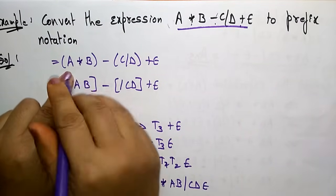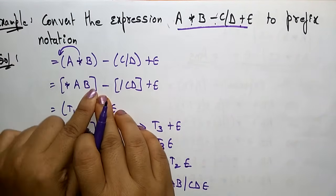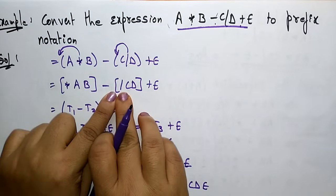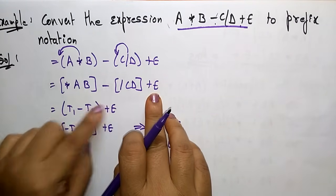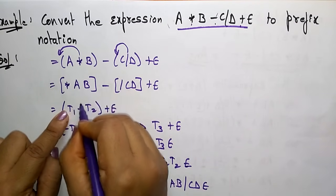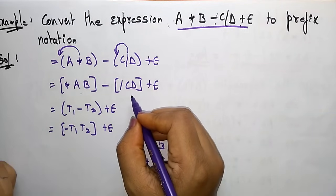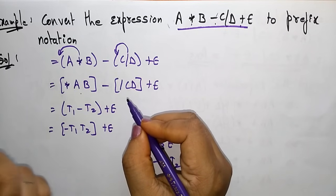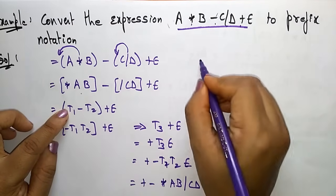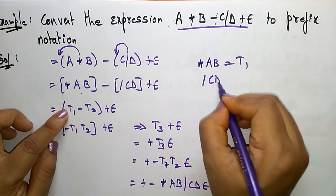So apply the prefix. Prefix means the operator comes before the operands. That is: star A B. Then minus — place this operator before. This gives prefix: star A B. Division C D plus E. Now I am taking star AB as T1 and division CD as T2, because I want to reduce the expression until it contains only two operands and one operator.